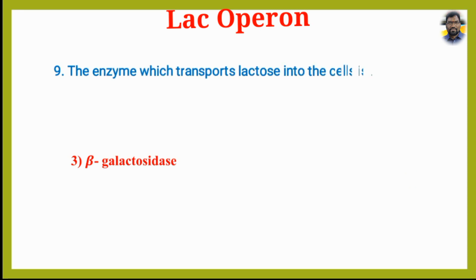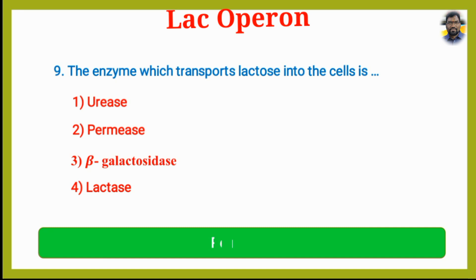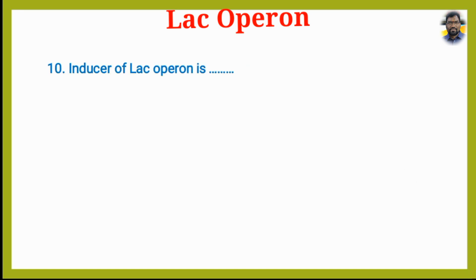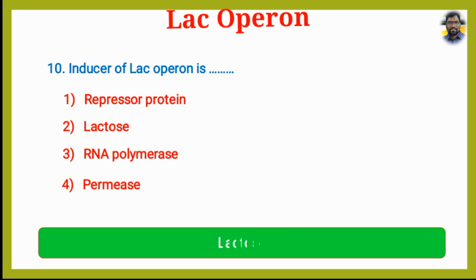The enzyme which transports lactose into the cell is? Option 1: Urease. Option 2: Permease. Option 3: Beta-Galactosidase. Option 4: Lactose. The answer is Option 2, Permease. The inducer of the Lac Operon is? The answer is Option 2, Lactose.